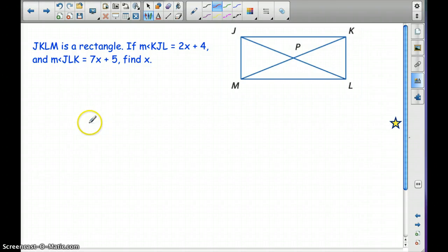All right, let's try another one. JKLM is a rectangle. If the measure of KJL, so this piece right here, is 2X plus 4, and the measure of JLK, this one right here, is 7X plus 5, we want to find X. So pause for a second. See how you think you would solve that.